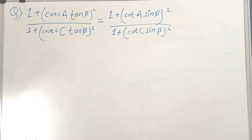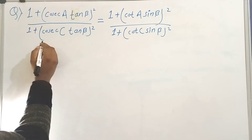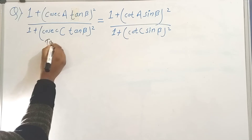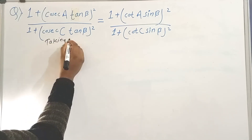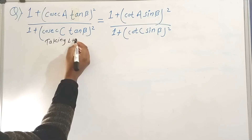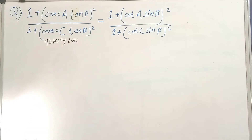Hello, I am Sannoyota Trigonometry. Prove that question. The question is: 1 plus cosec a, tan b squared, 1 plus cosec c, tan b squared, plus 1 plus cot a, sin b squared, 1 plus cot c, sin b squared.